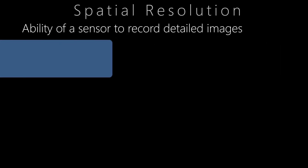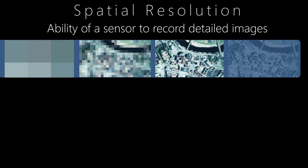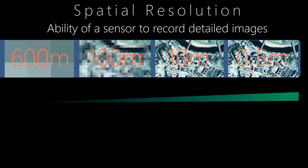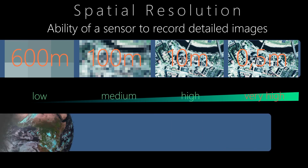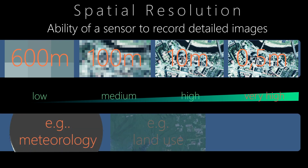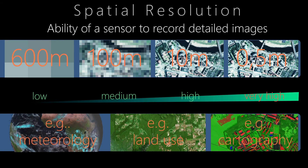The spatial resolution describes the ability of a sensor to record details. It is given in meters and ranges from low to very high spatial resolution. Whether sensors with high or low resolution are used depends chiefly on the field of application in which the satellite data is needed.